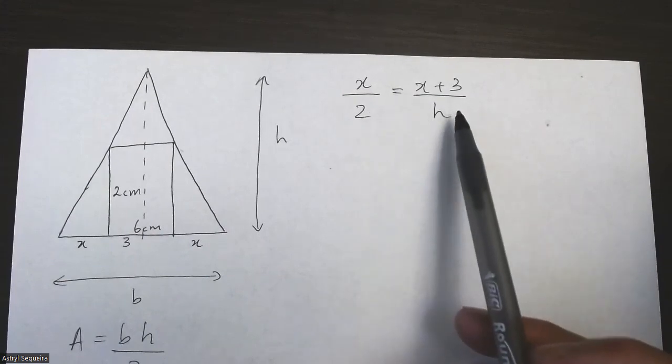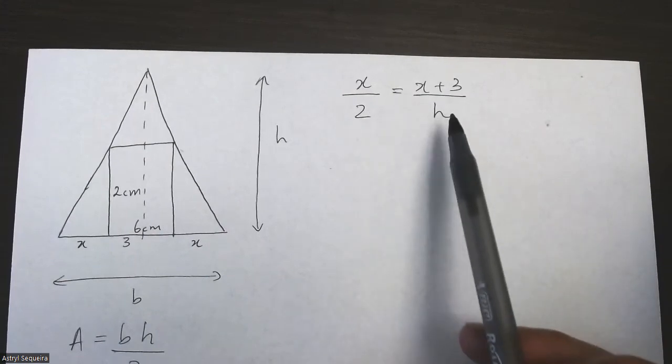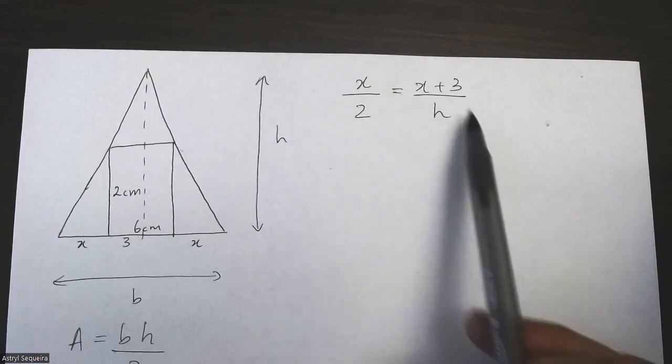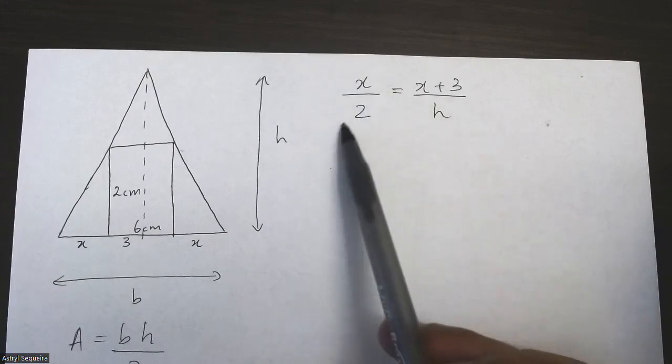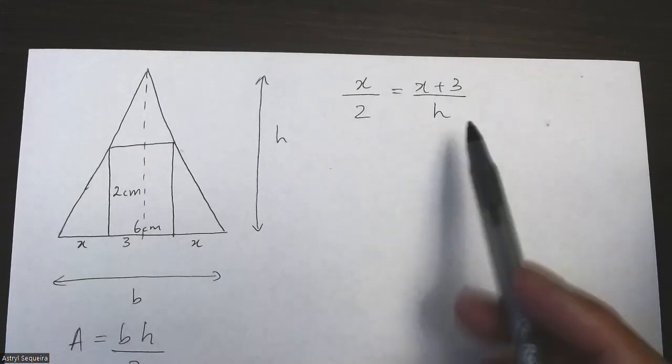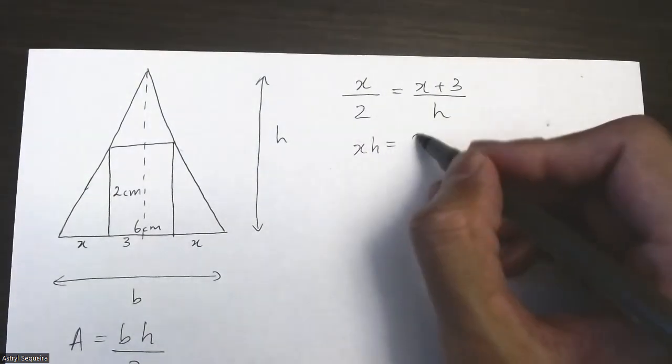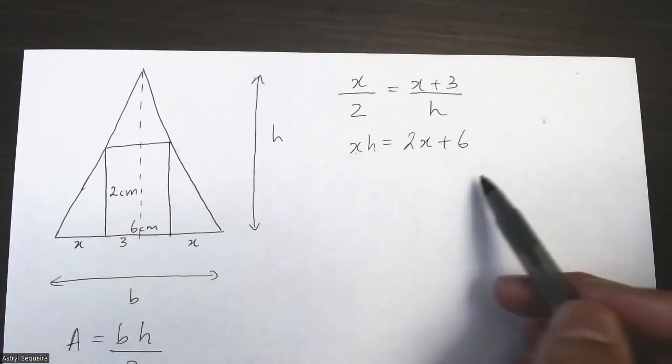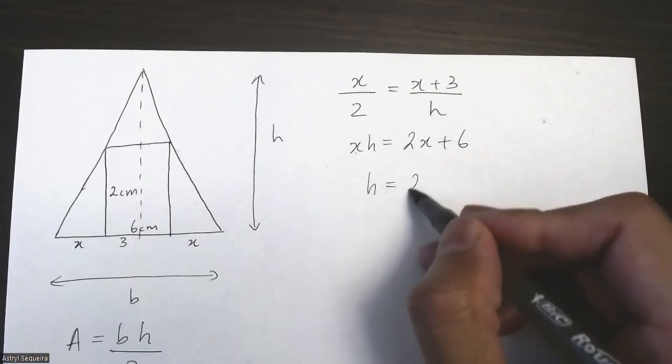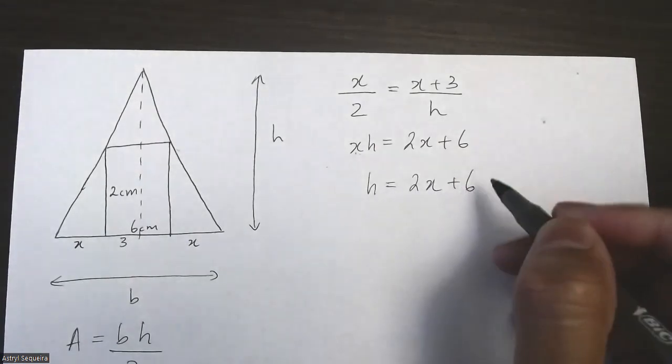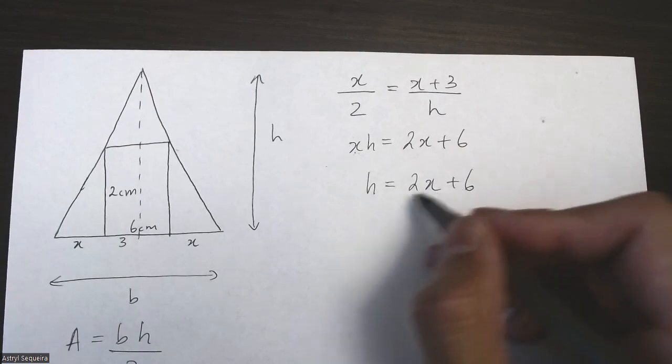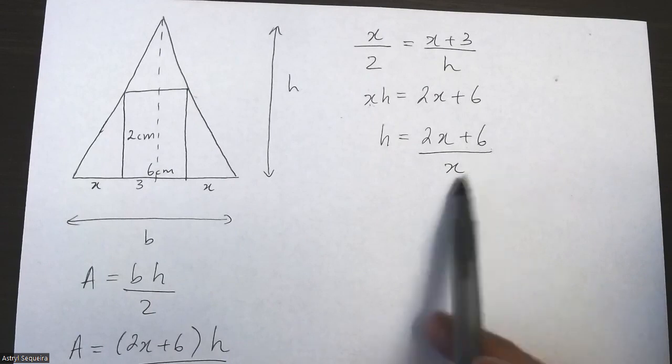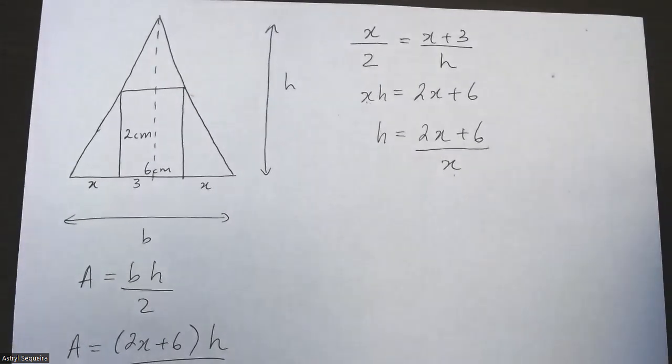So now we have a second equation with x's and h's. We can isolate a variable. It's easiest to isolate h over here because there's only one h. I'm going to cross multiply these two, so I'll have x times h equals 2x plus 6, and then I'll just divide the x on the other side. So the height is just 2x plus 6 over x.